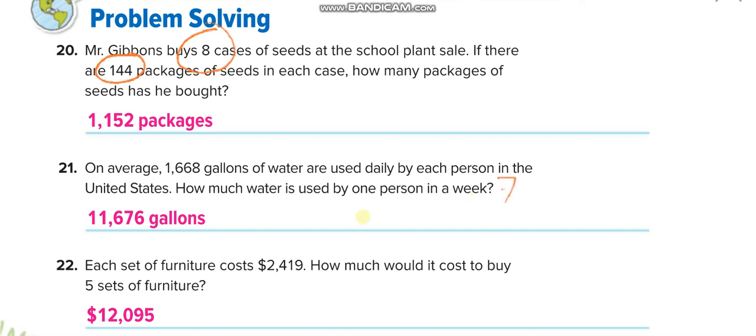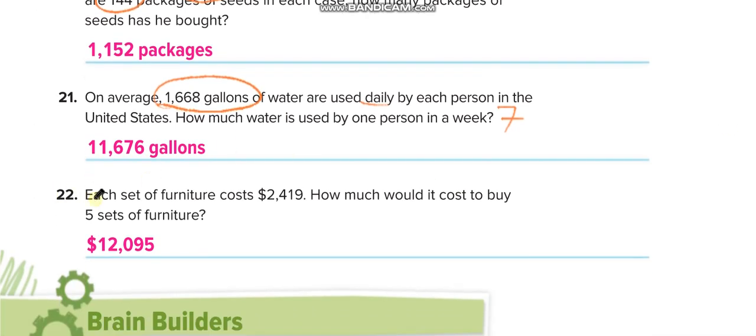Equals 11,676. Each set of furniture costs $2,419. How much would it cost to buy five sets of furniture? So five multiply by $2,419.